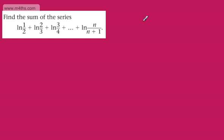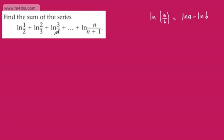We're going to continue our work looking at sums of finite series using the method of differences. This was a previous exam question, and on the face of things it doesn't seem that straightforward. There's one little trick we can look at. If we think about the natural log of A divided by B, we can write this as the natural log of A minus the natural log of B.